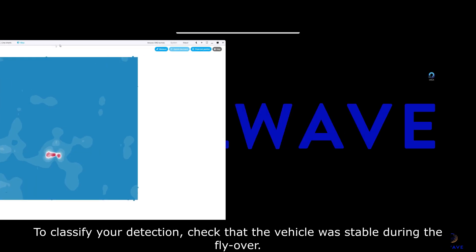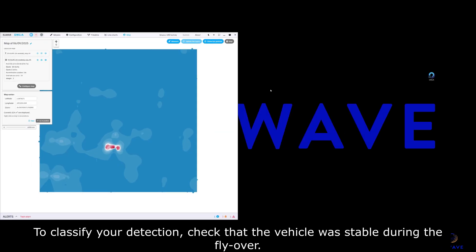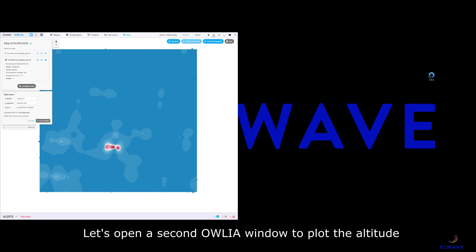To classify your detection, check that the vehicle was stable during the flyover. Let's open a second Alia window to plot the altitude.